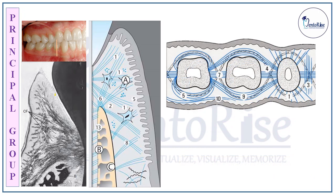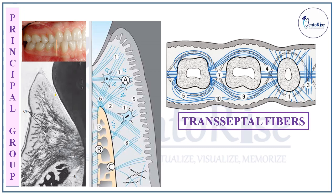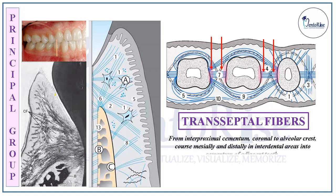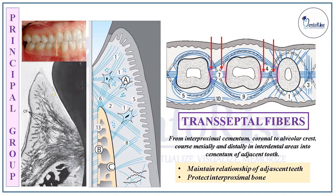The next category of fibers within the principal group are the Transseptal fibers. The transseptal fibers connect the proximal surfaces of adjacent teeth — they start from the distal surface of one tooth and end at the mesial surface of the adjacent tooth. In this way, they maintain the relationship of the adjacent teeth. These fibers are present coronal to the alveolar crest and thus also protect the interproximal bone.